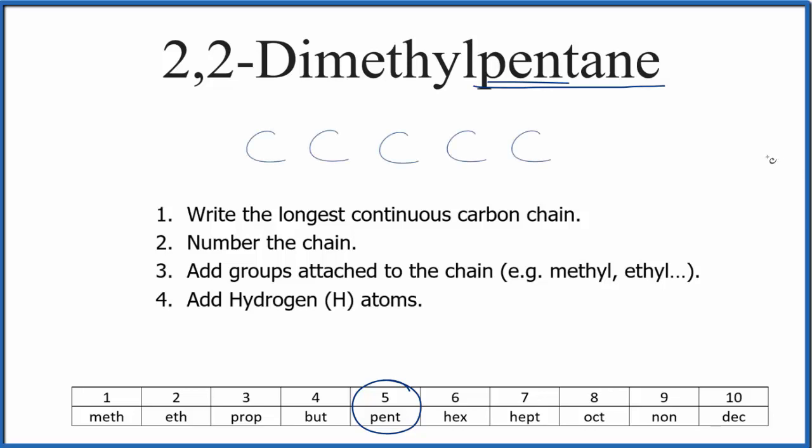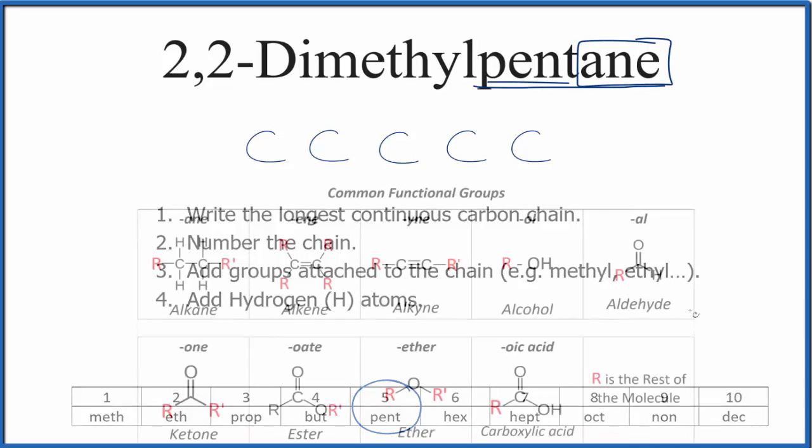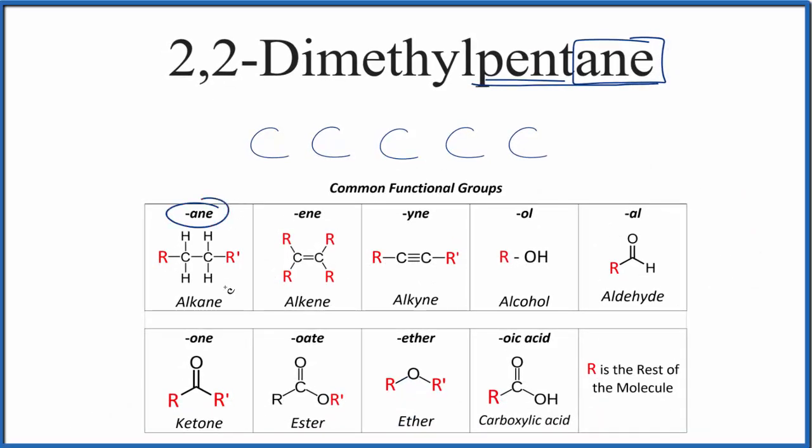That looks like this. We can also look at the ending of pentane and see that it ends in A-N-E. If we look at this chart here, we see that A-N-E, that's an alkane. Alkanes consist of carbons with only single bonds between the carbon atoms. So we're going to put single bonds between each of these carbon atoms here.